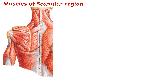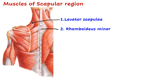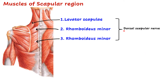Let us now look at the muscles of the scapular region. Three muscles are attached on the dorsal surface of the medial border of the scapula: levator scapulae, rhomboidus minor, and rhomboidus major. All three muscles are supplied by the dorsal scapular nerve, which runs deep to these muscles.